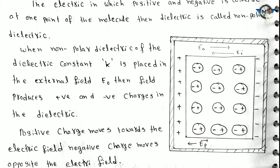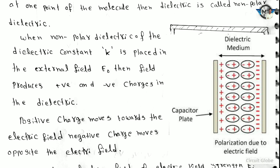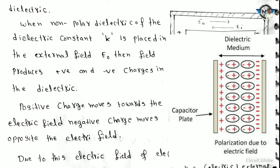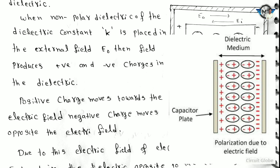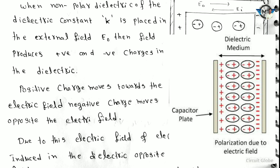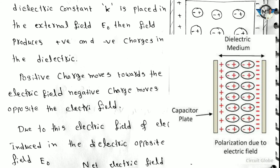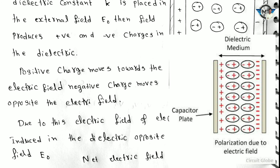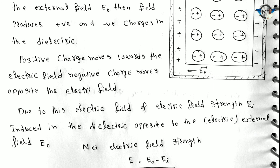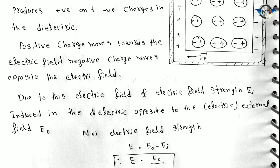We observe the diagram. E naught is the external electric field, which produces positive and negative charge separation. The positive charge moves towards the electric field and the negative charge moves towards the opposite side. Due to this, an induced electric field Ei is produced in the dielectric, opposite to the external field E naught. The net electric field is E equals E naught minus Ei. Therefore E equals E naught by K, meaning the net electric field decreases by K times.